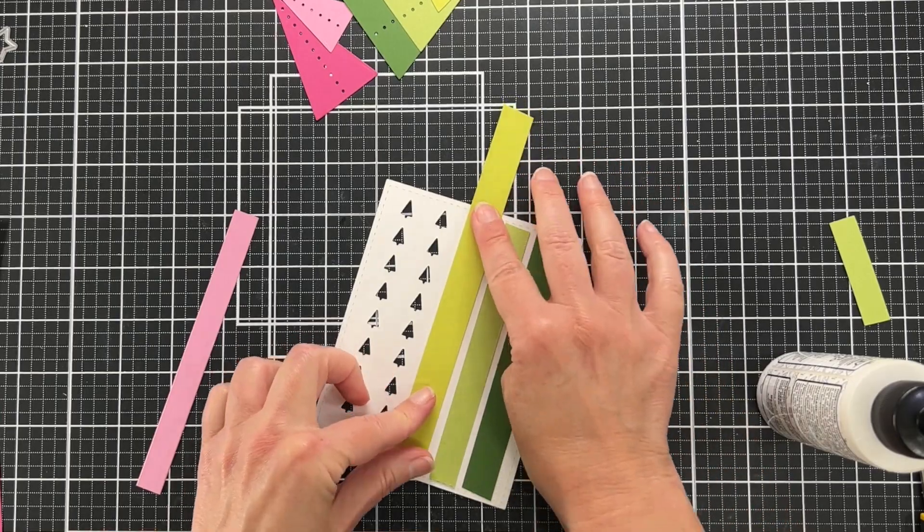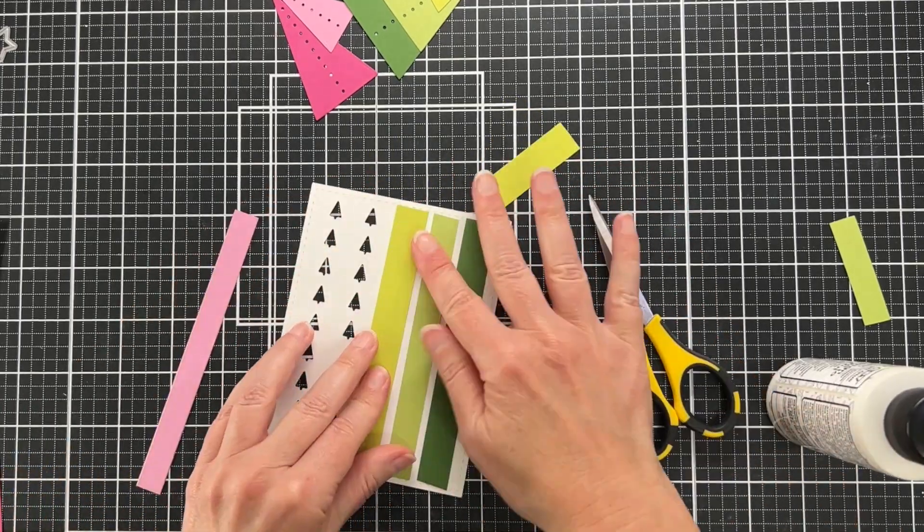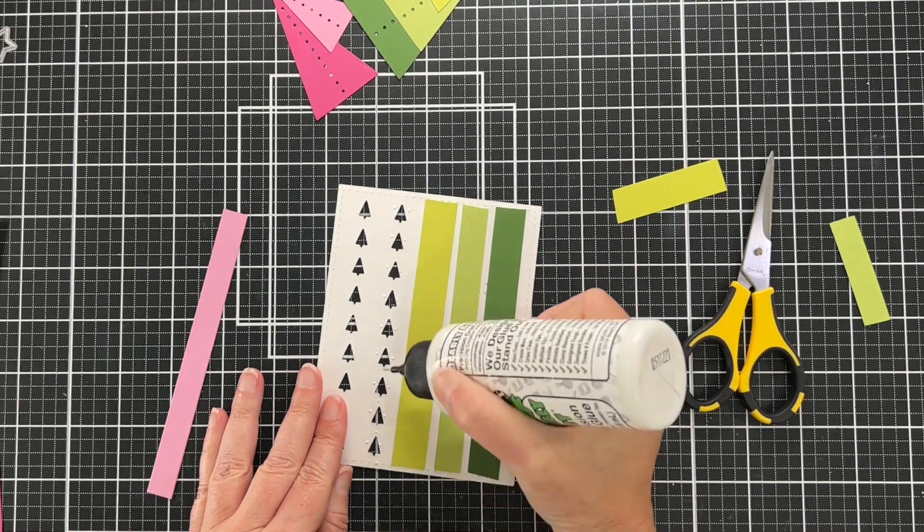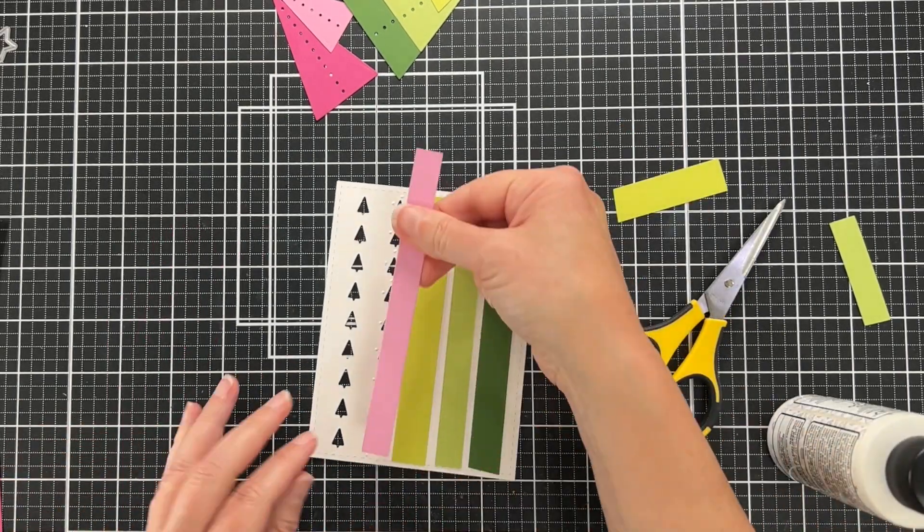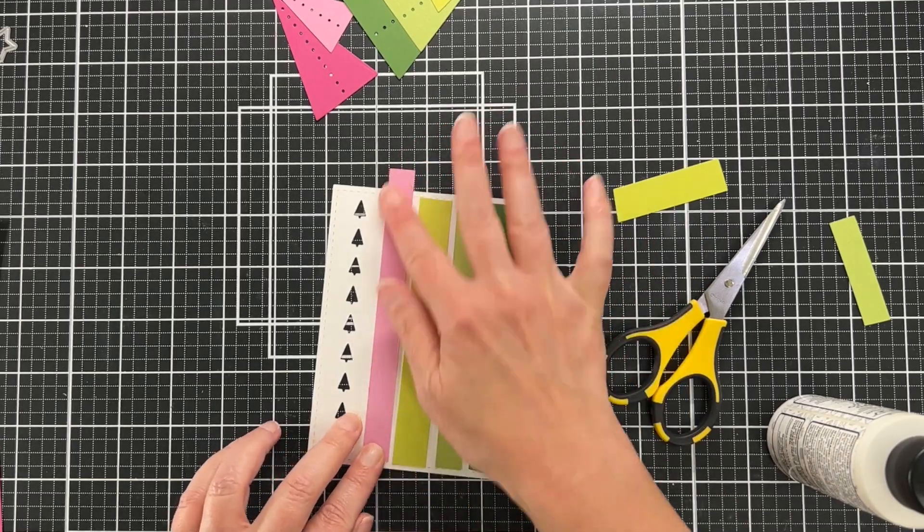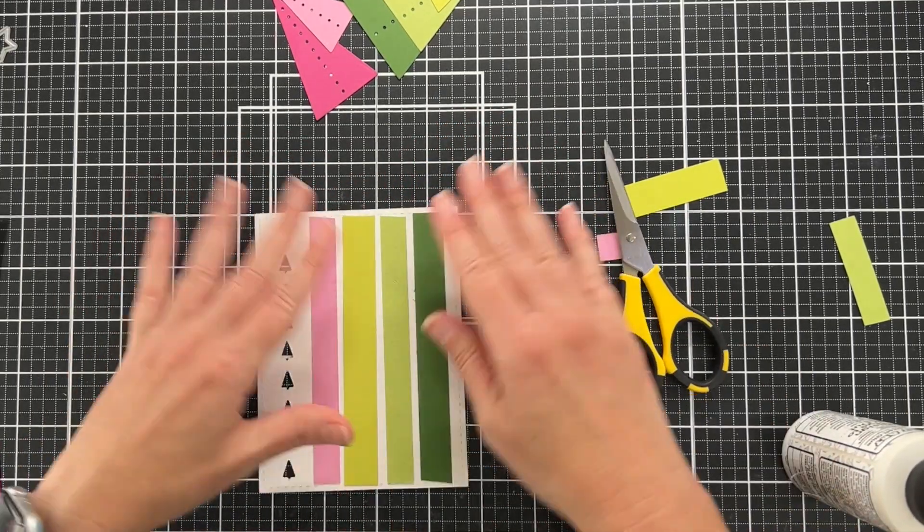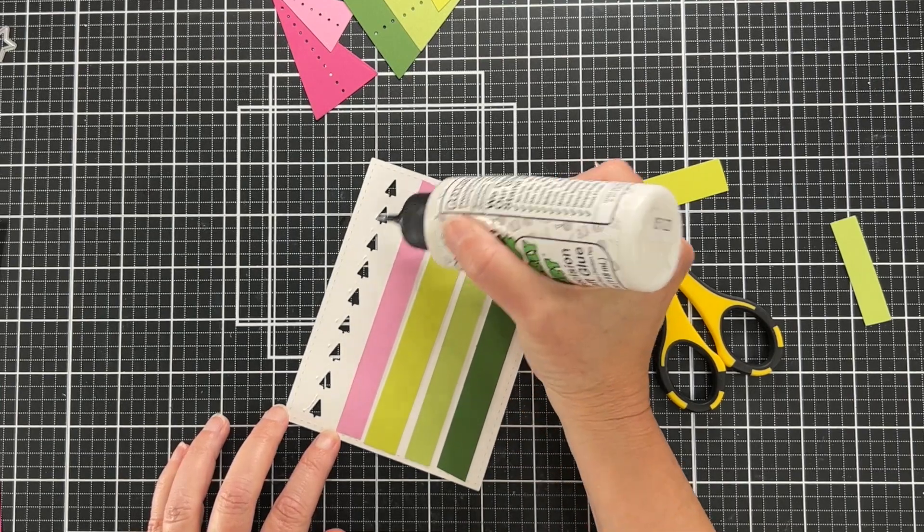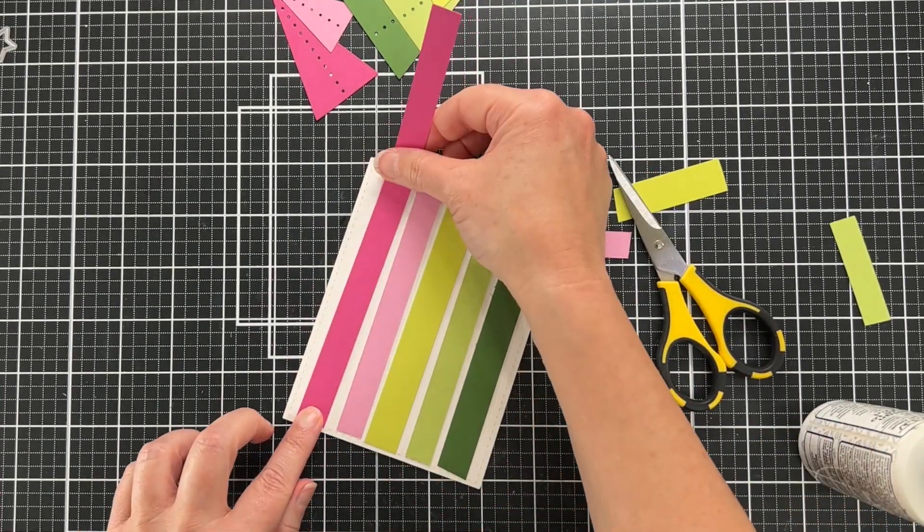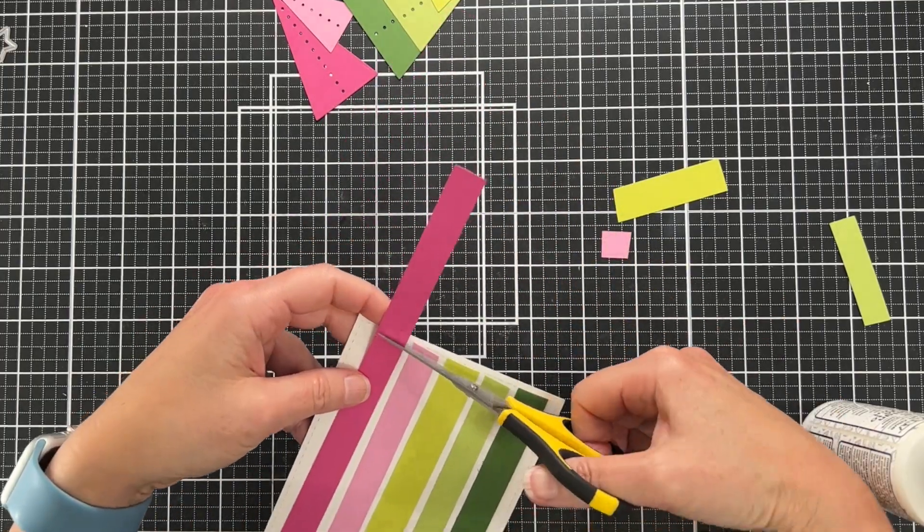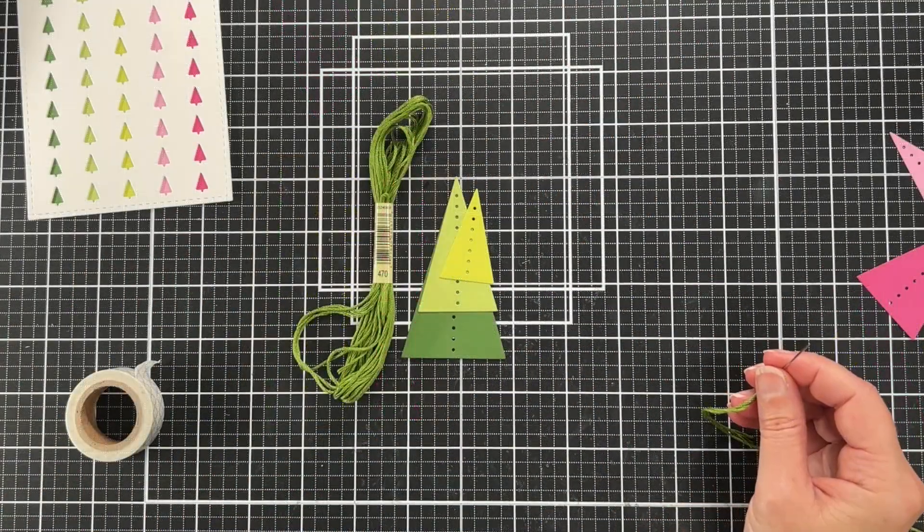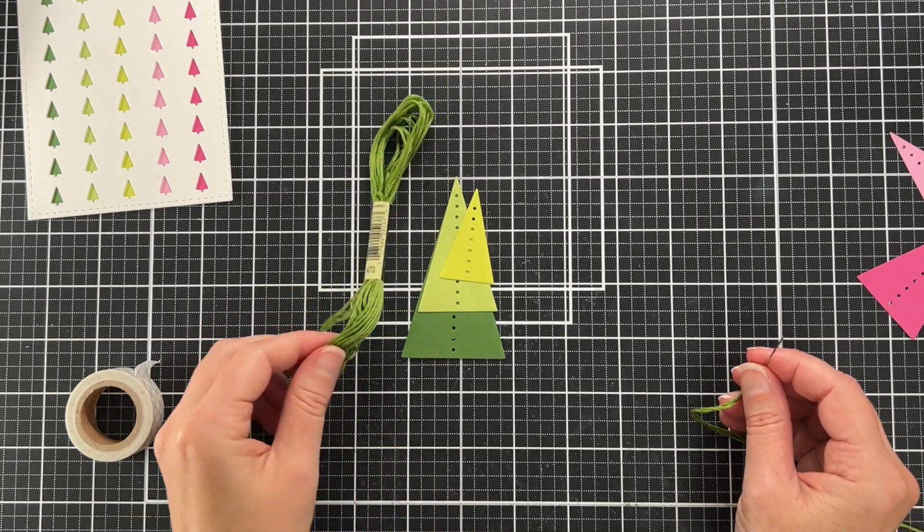If you've never done stitching on a card, maybe you're intimidated by it or maybe you don't like stitching, I think that small dies like this—number one, if you've never done it before, they're a great way to start with stitching on your cards. Number two, if you just don't like doing a lot of stitching, then again these are great because they're small and there's really not a lot of stitching involved.